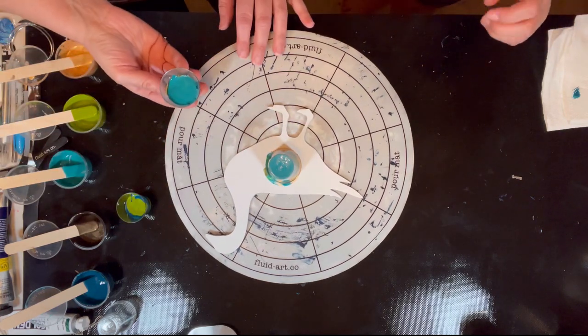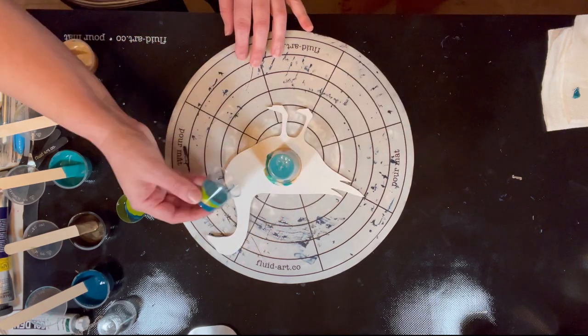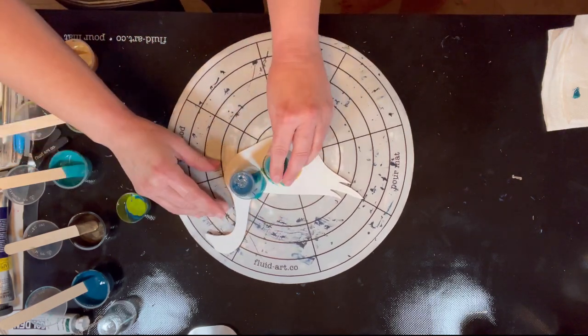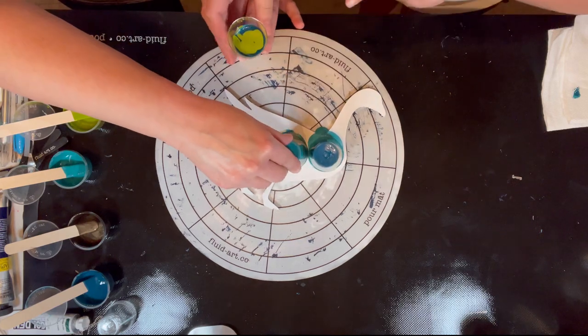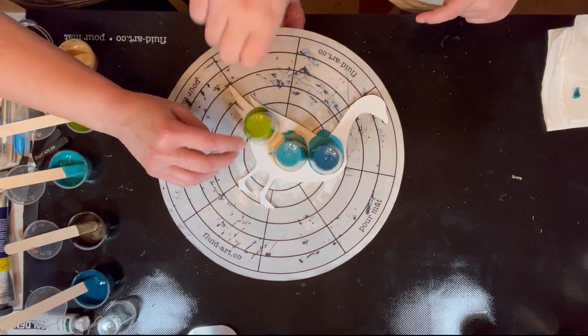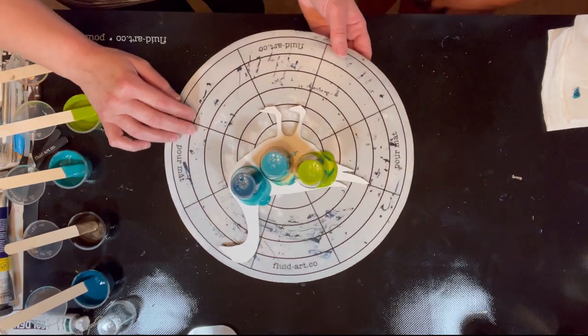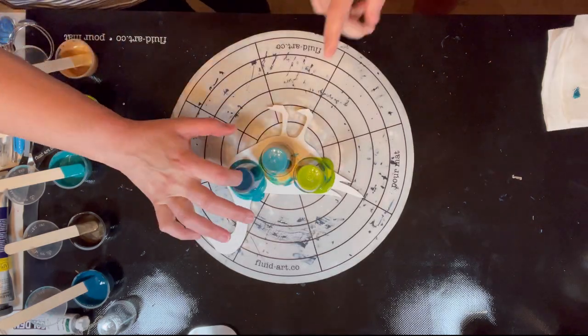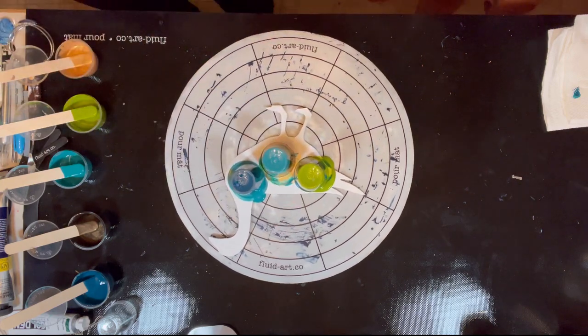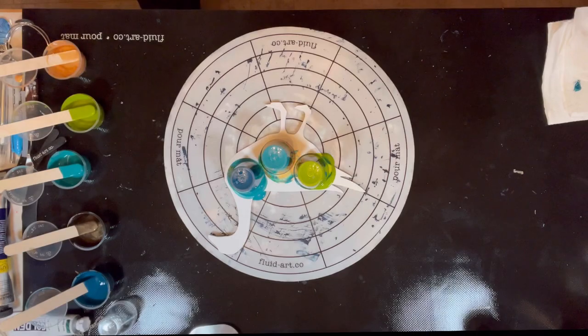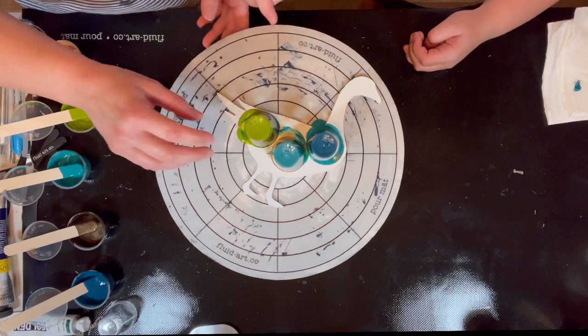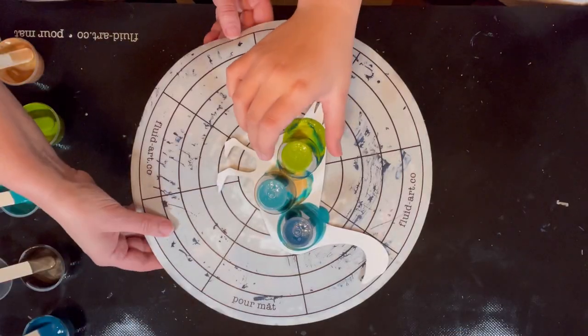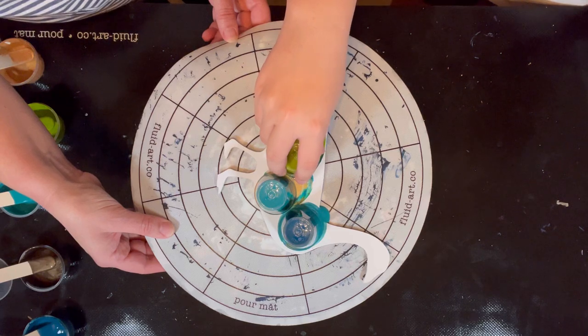So these are the colors that we layered. I helped pick out the colors. Now we're going to flip them, right? We're going to turn it over. Ready to flip it?